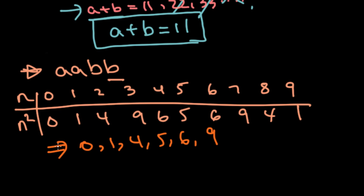And not only for this problem, but this is also a useful thing to be aware of. So we're going to try to use this condition in here. So B can only be 0, 1, 4, 5, 6, or 9. So now we can start our casework.